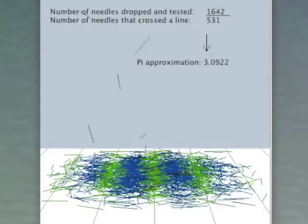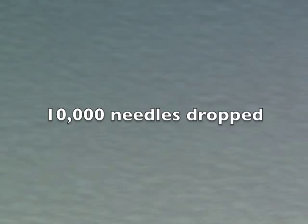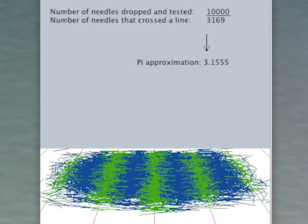So we can see that we still don't have a very good approximation of pi with all of these needles. And after 10,000 of these needles, our approximation is only 3.1555.